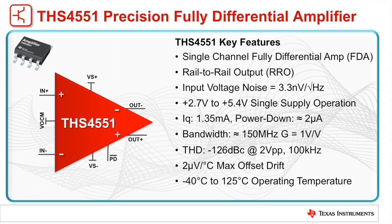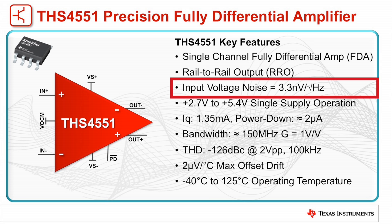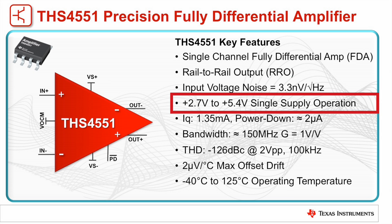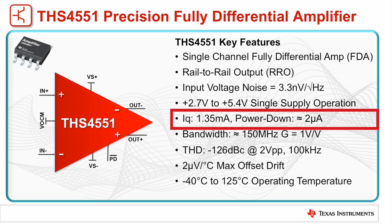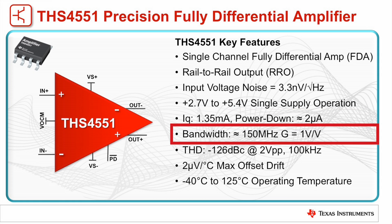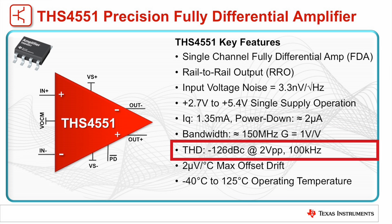The THS4551 single-channel fully differential amplifier features an impressive input voltage noise of only 3.3 nV per root hertz. It's operated off of a 2.7V to 5.4V single supply and has a typical quiescent current of only 1.35 mA. The device also features a pin-activated power-down mode where the device only consumes 2 microamps. The amplifier also offers stellar performance with a unity gain bandwidth of 150 MHz and a total harmonic distortion of negative 126 dB at 100 kHz 2V peak-to-peak.